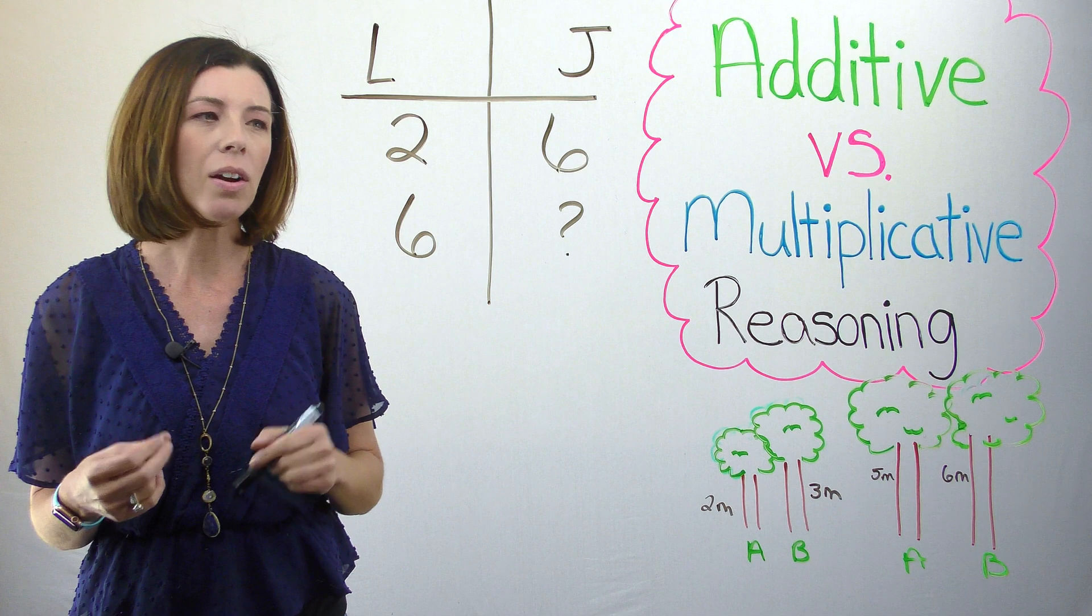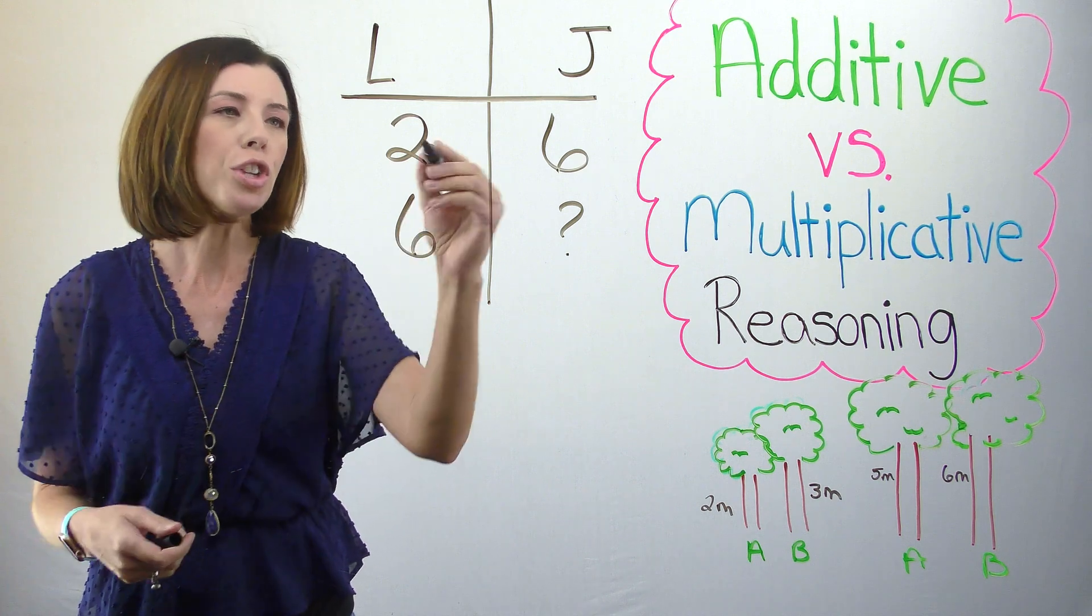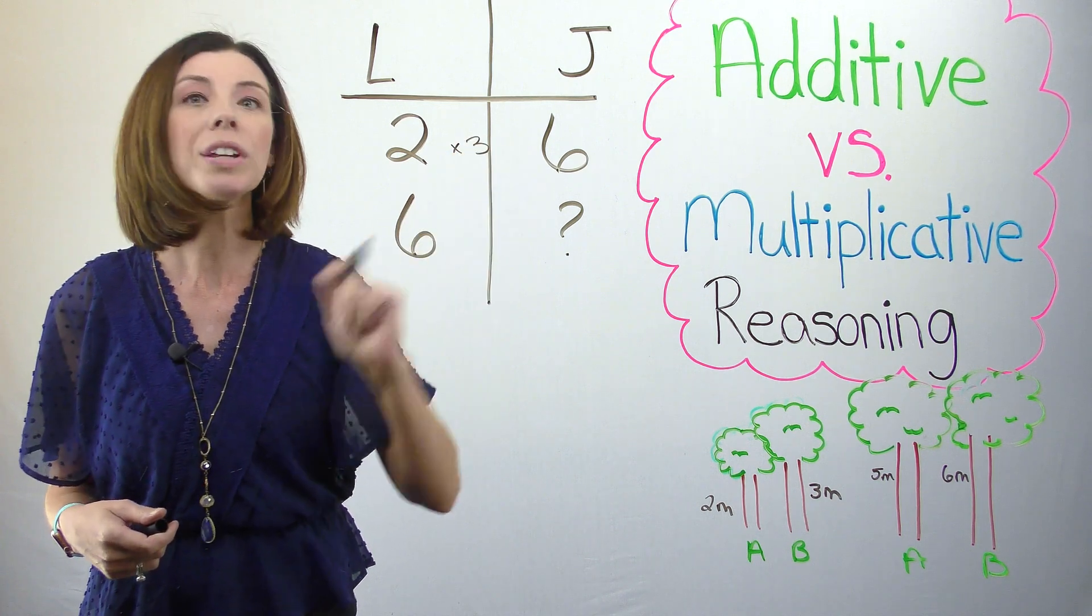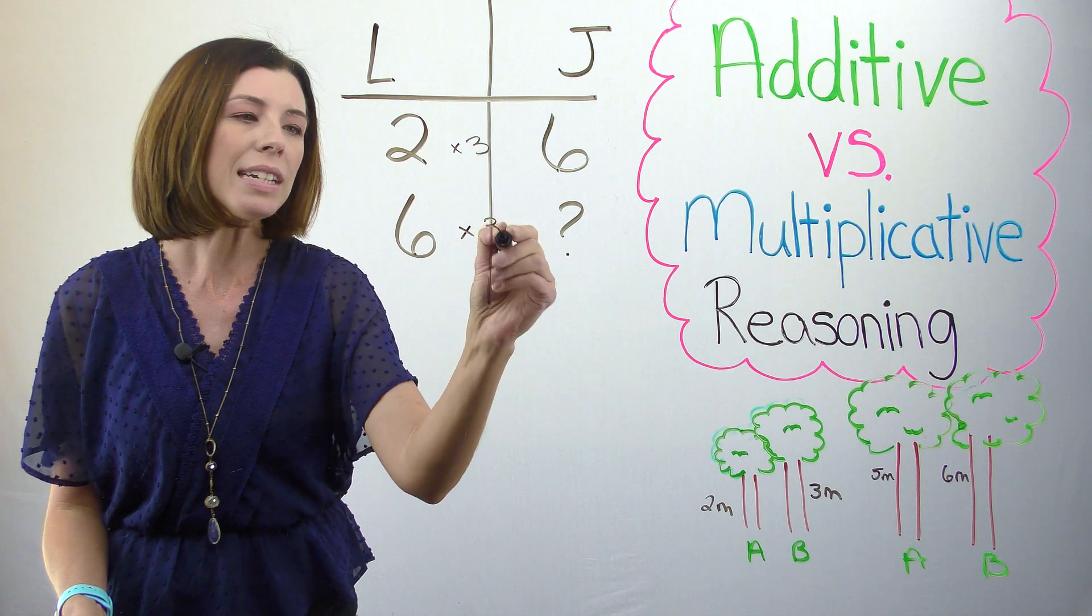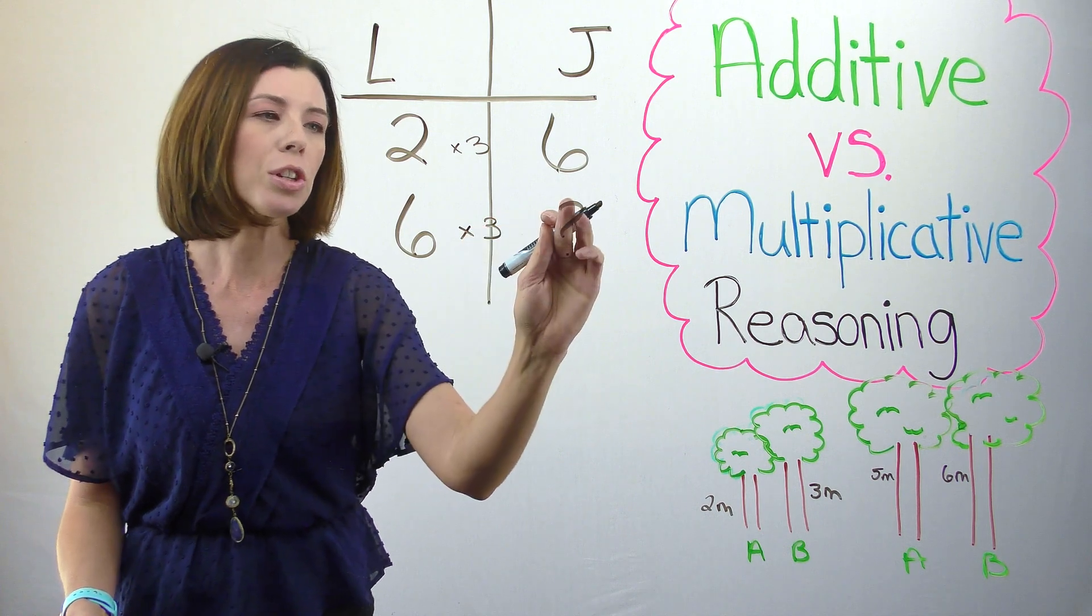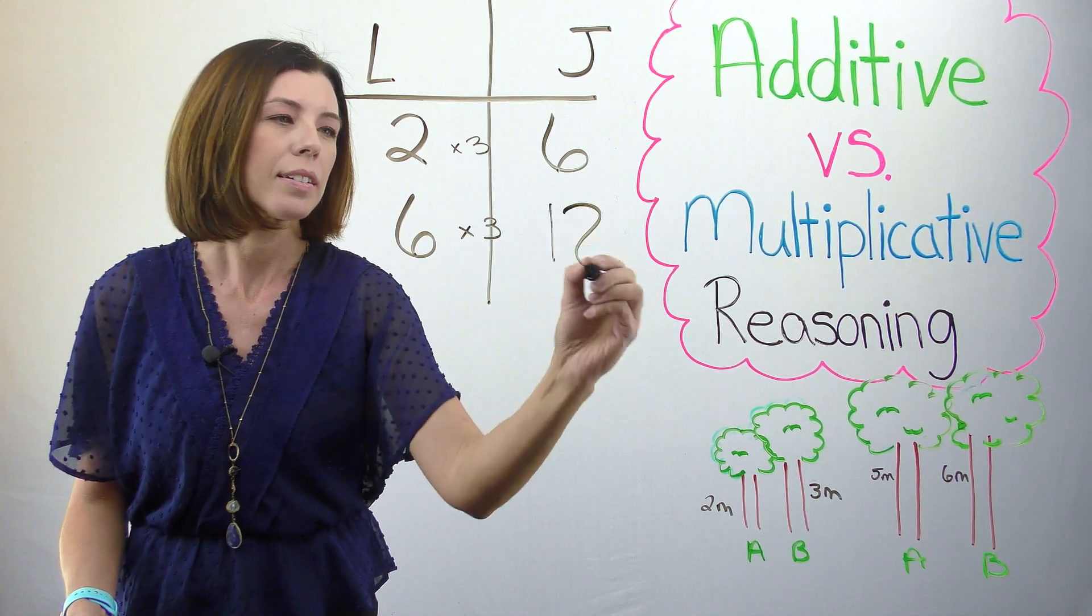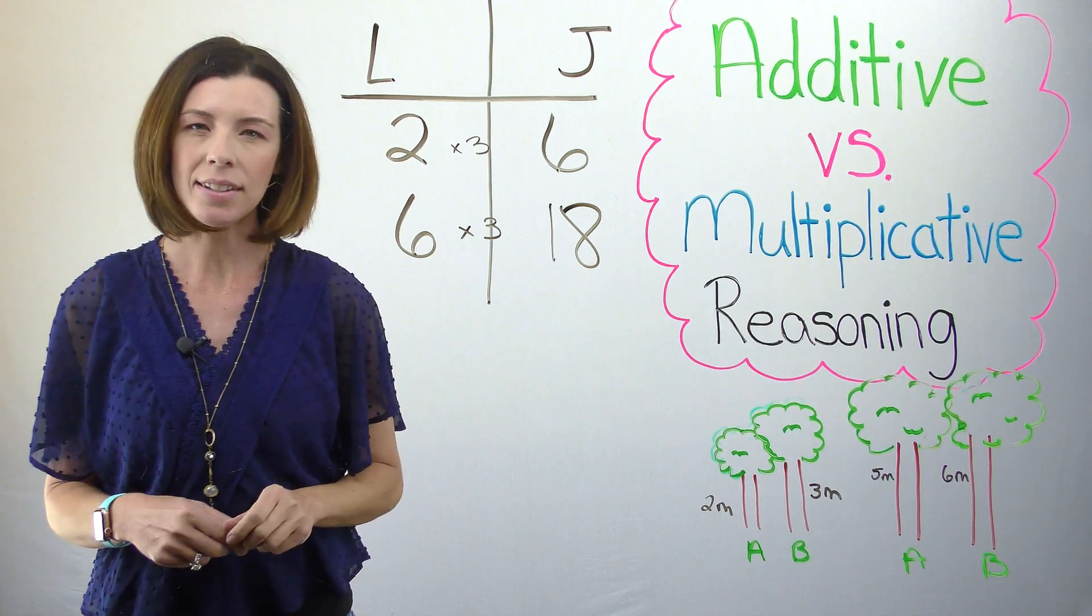So one way of thinking might be to go, okay, well if James is 3 times as old as Lisa, then when Lisa is 6, James is actually going to be 18. Does that make sense though?